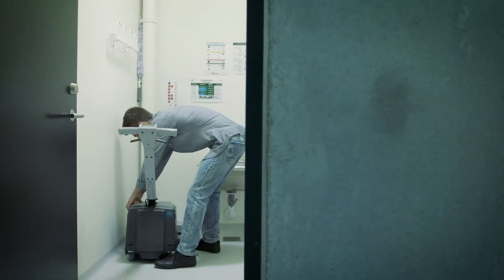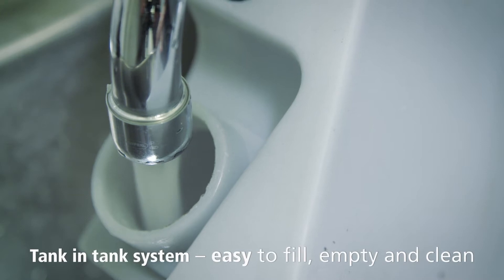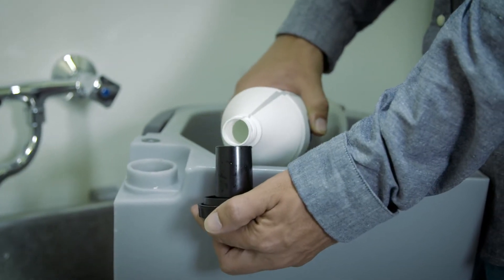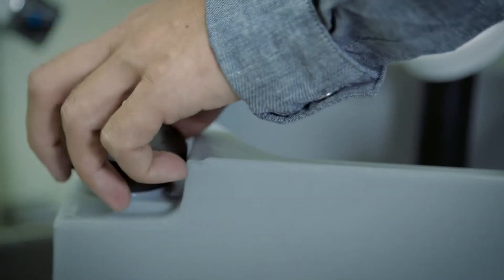The scrubber dryer has a tank and tank system, which makes it easy to fill and empty. And the tanks are easily cleaned, making the scrubber dryer ideal for places where hygiene is an absolute priority.